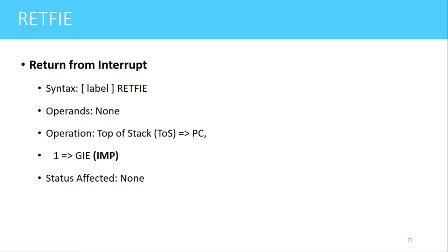The second operation performed is that the GIE bit — the Global Interrupt Enable bit — is set equal to one. This is because whenever an interrupt service routine begins to execute, all interrupts are disabled by making the GIE bit equal to zero. So when RETFIE executes after the ISR completes, the GIE bit is set back to one so that new interrupts can again be accepted.